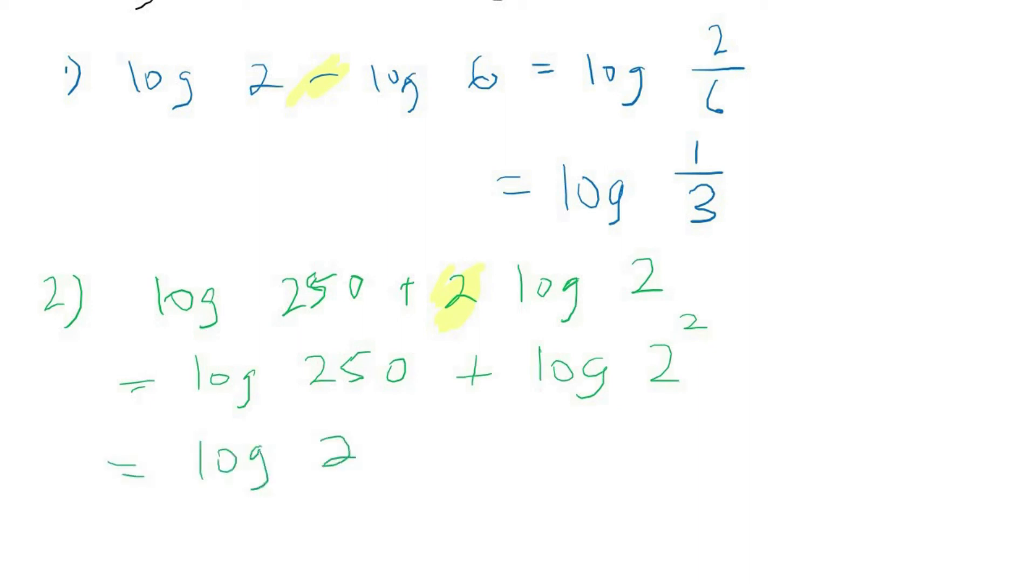Then you can use the first formula that says that because it is a plus, you can change it to a multiplication. So you have 250 multiply by 4, which is 1000.